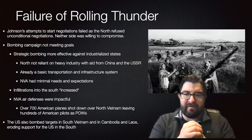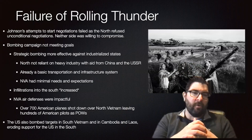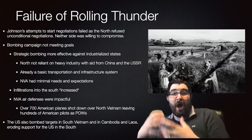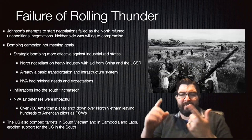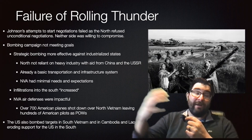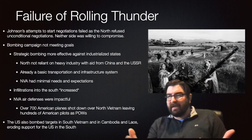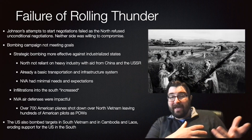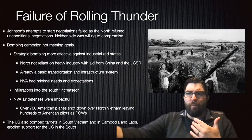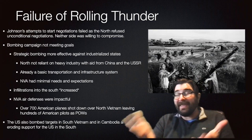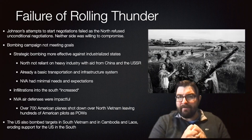This bombing campaign was not meeting the Americans' goals. Strategic bombing is far less effective against under-industrialized or unindustrialized states like North Vietnam. North Vietnam was not reliant on heavy industry, as they were getting their materials from outside — from China and the Soviet Union. North Vietnam already had a basic infrastructure and transportation system. The North Vietnamese Army had minimal needs and expectations; these fighters had been fighting wars since the Japanese invaded in 1941. The infiltrations across the Ho Chi Minh Trail would actually increase during the bombings of Rolling Thunder.